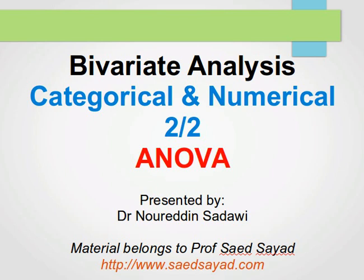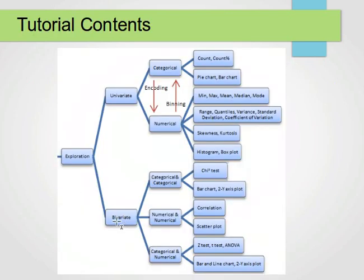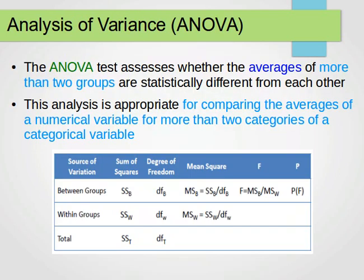Welcome back. We continue our bivariate analysis — our videos on how to analyze or compare the relationships between two variables when one of them is categorical and the other one is numerical. In this video we will be covering the ANOVA test, or the Analysis of Variance test. This is going to be the last video of this series on data exploration, and hopefully we'll be covering data mining algorithms from the next video on.